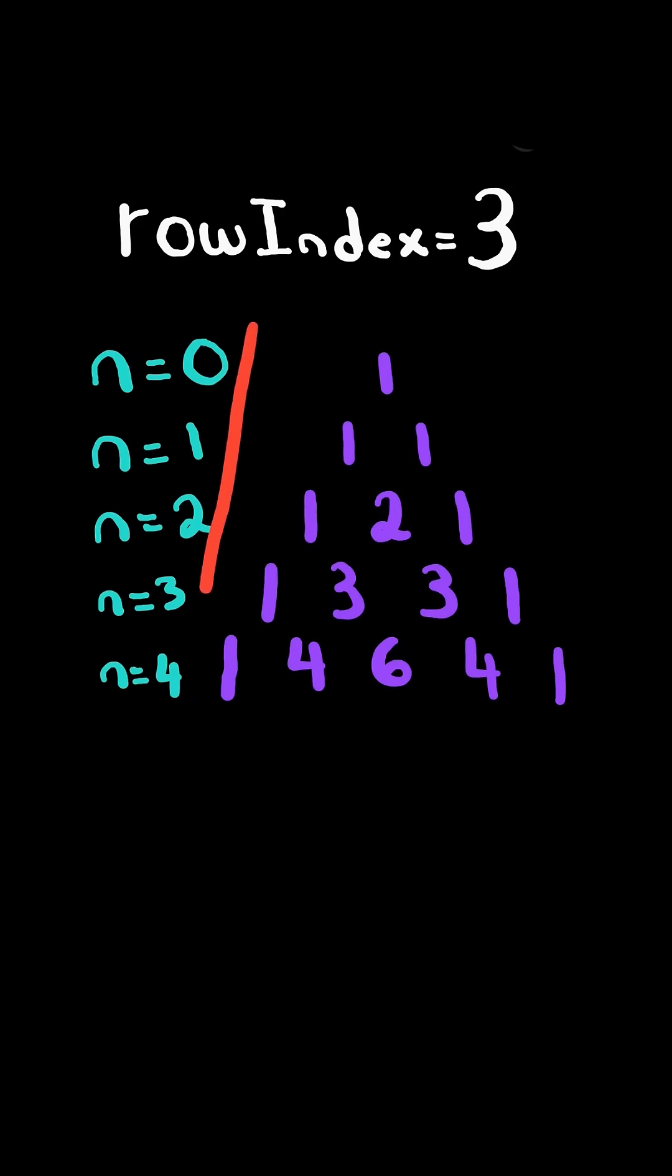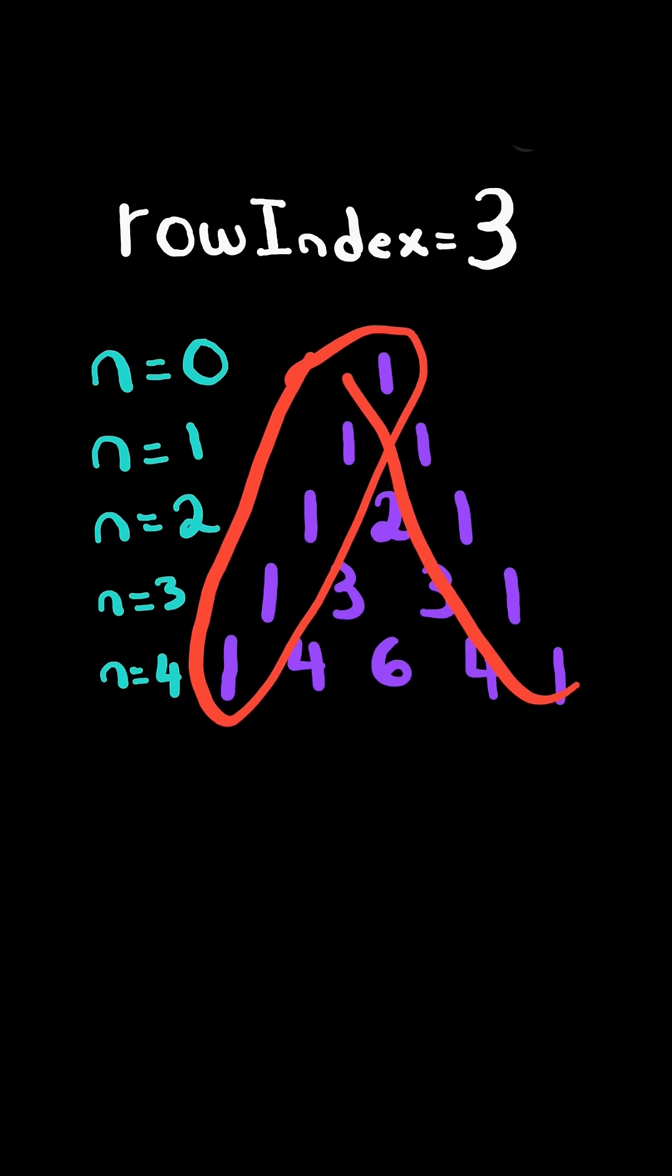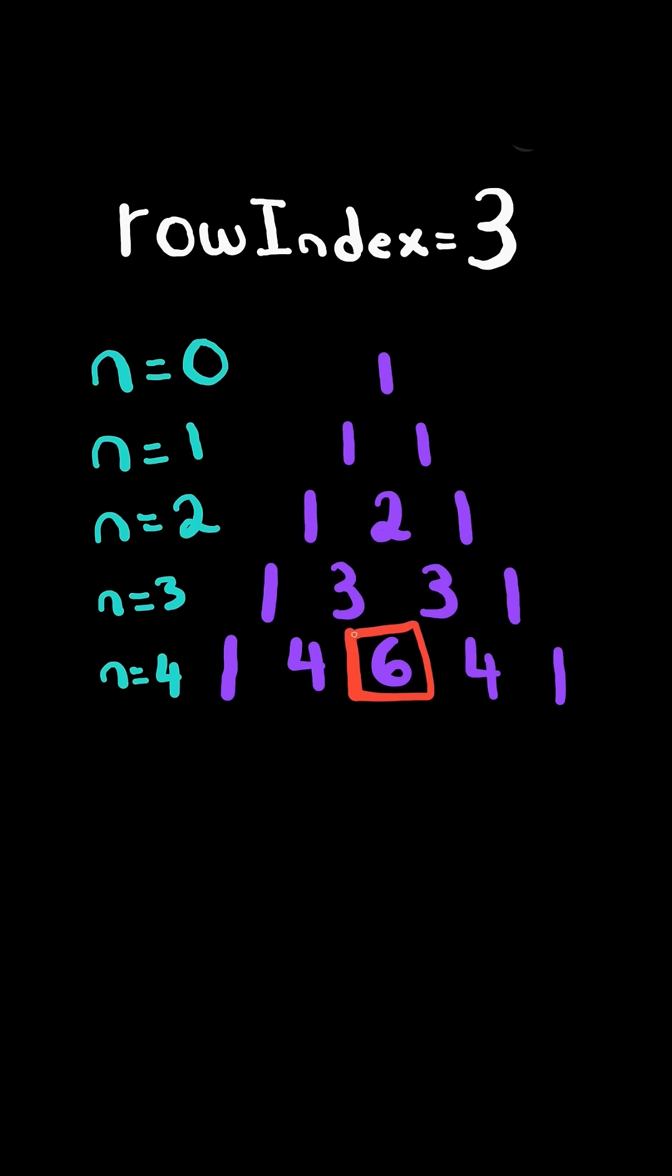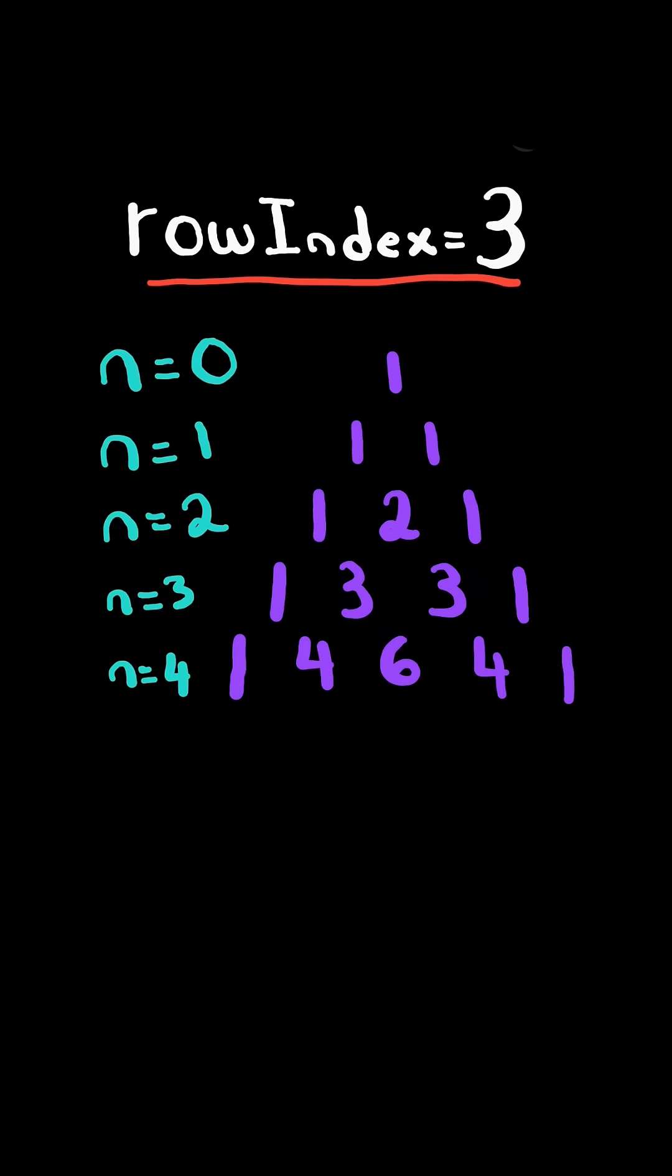Pascal's triangle 2. Consider Pascal's triangle. It is a triangle with ones along the diagonal, and every other element is the sum of the two numbers directly above it.